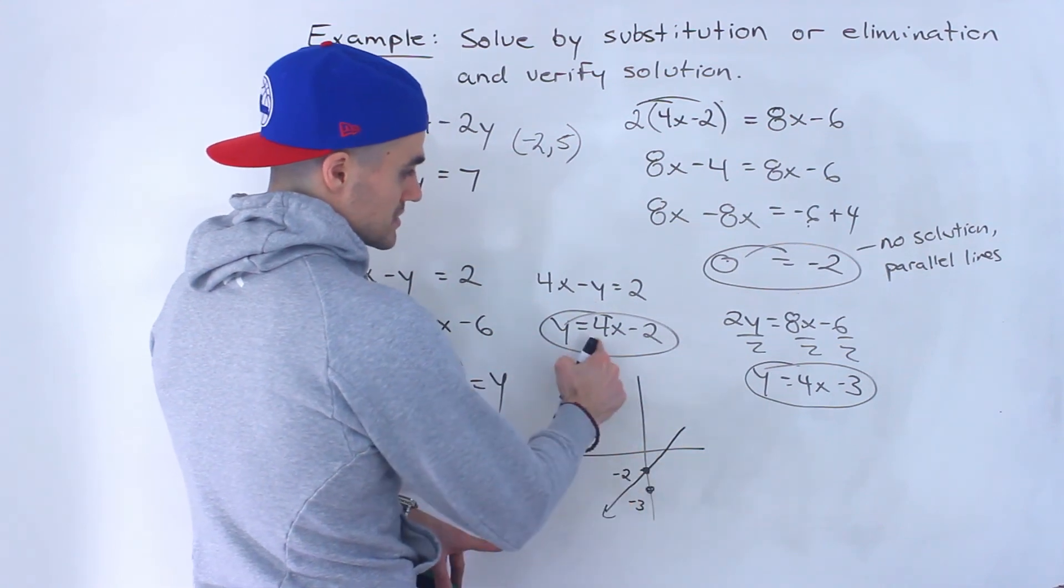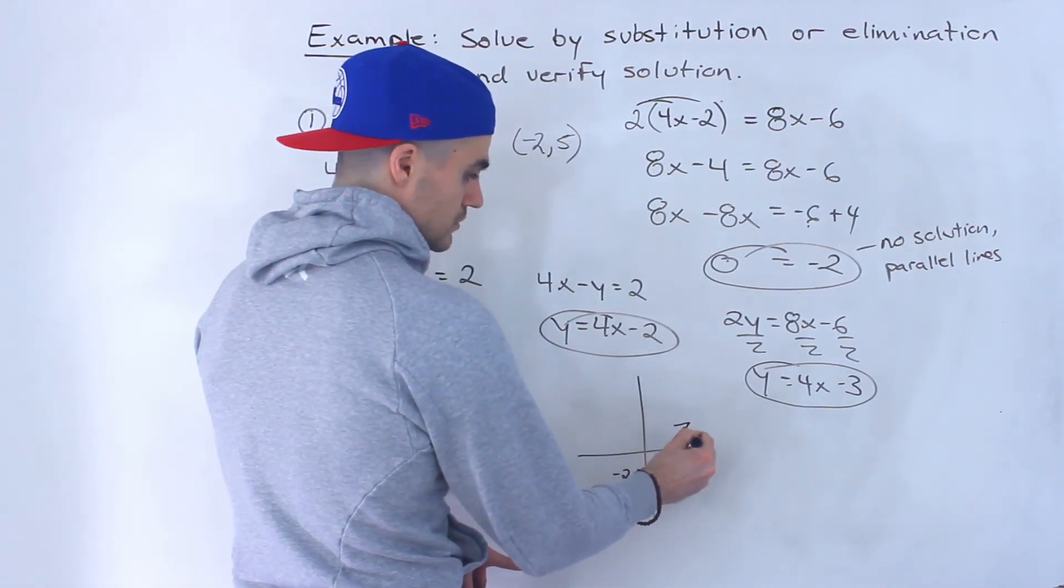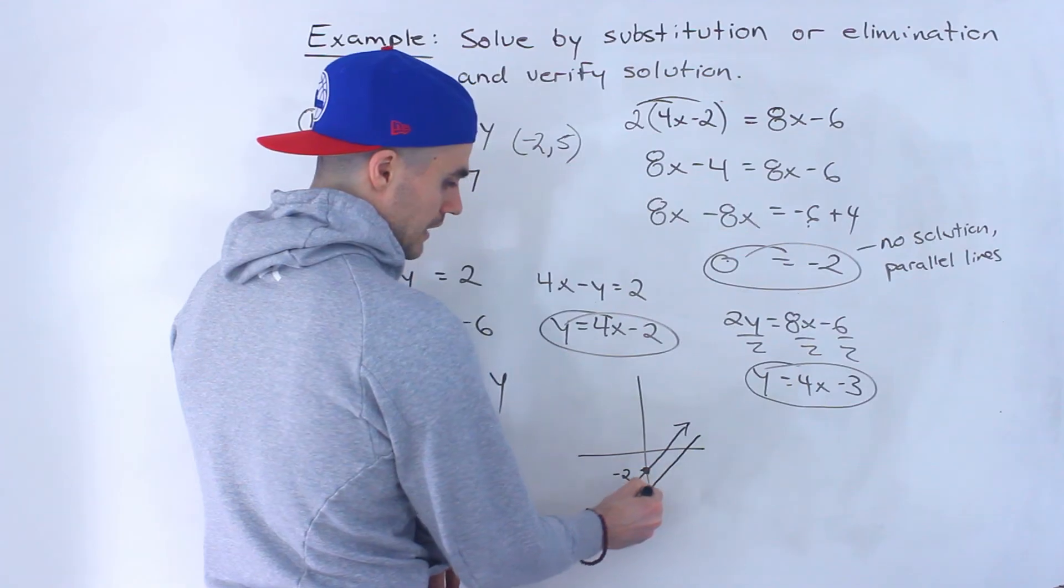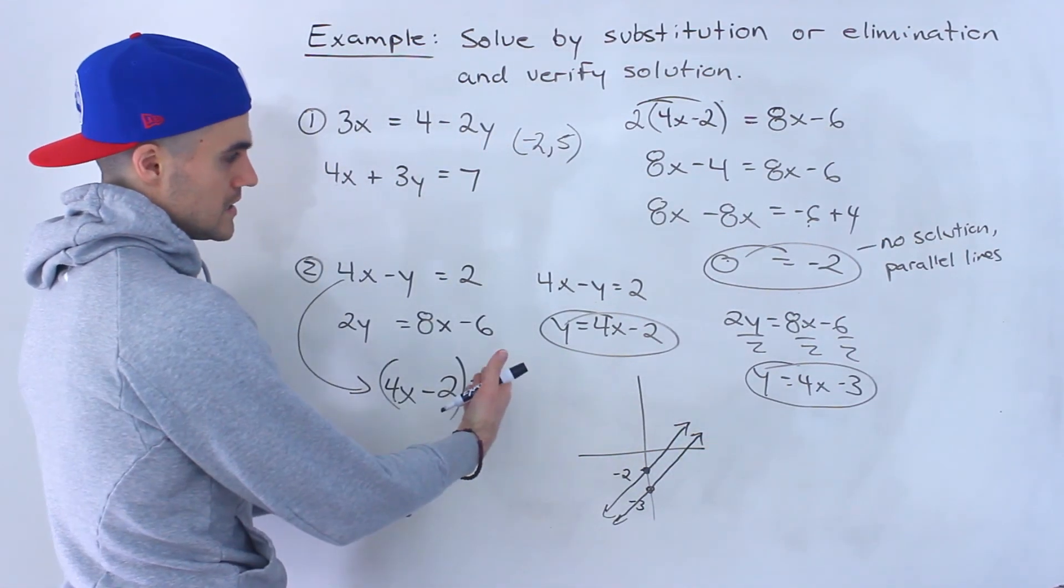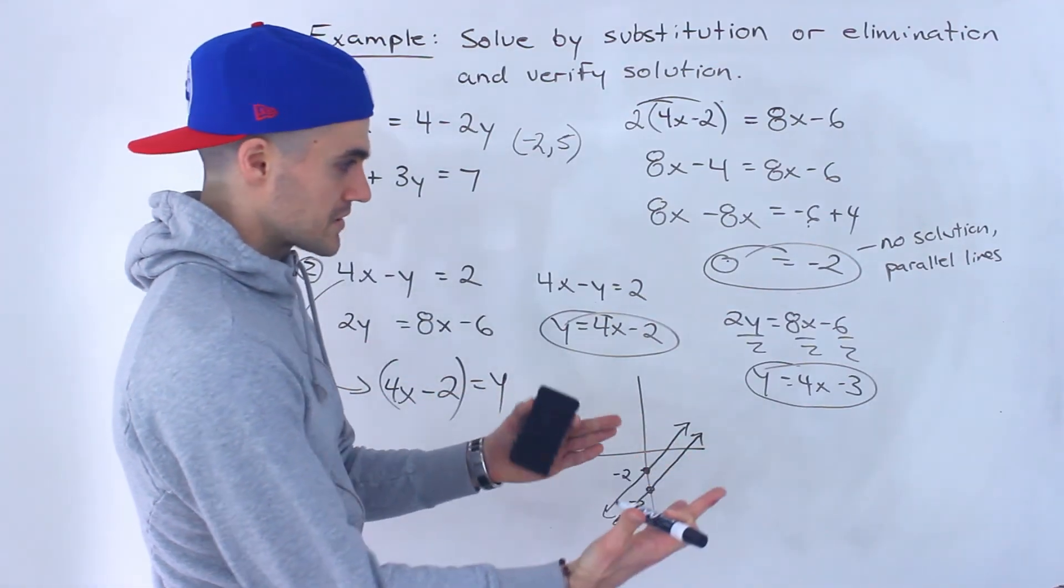So it would look something like this. Positive 4x, it's a positive slope. So this line would be like that. This line would be like that.